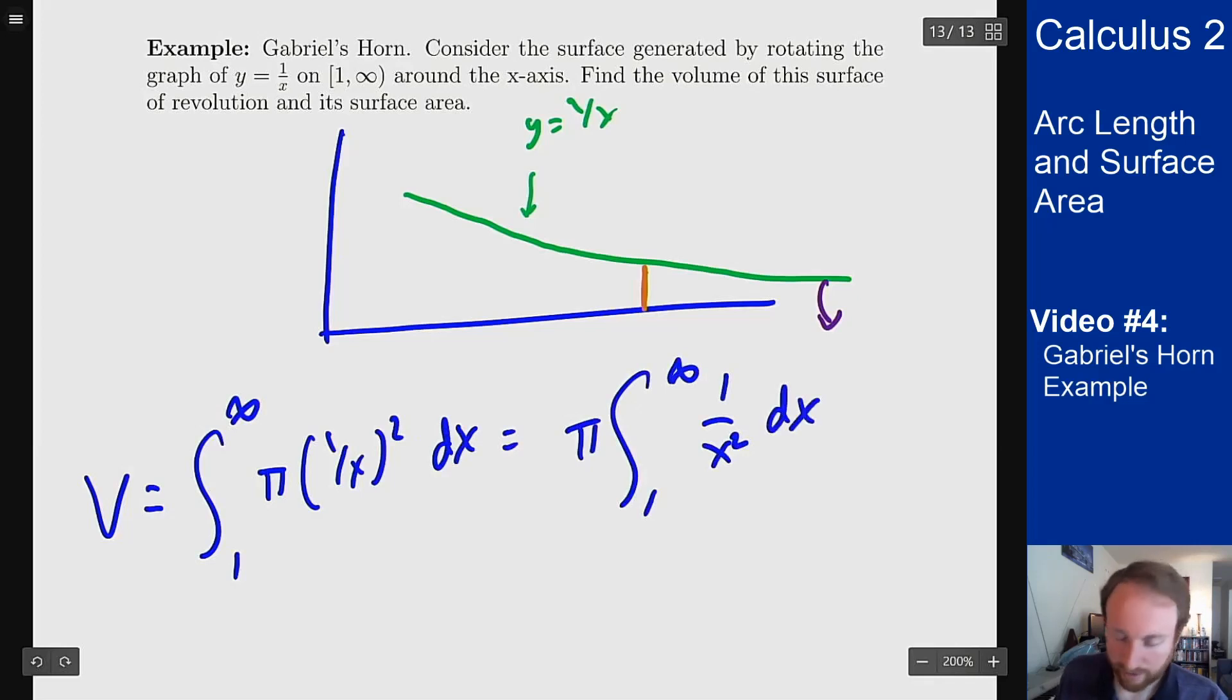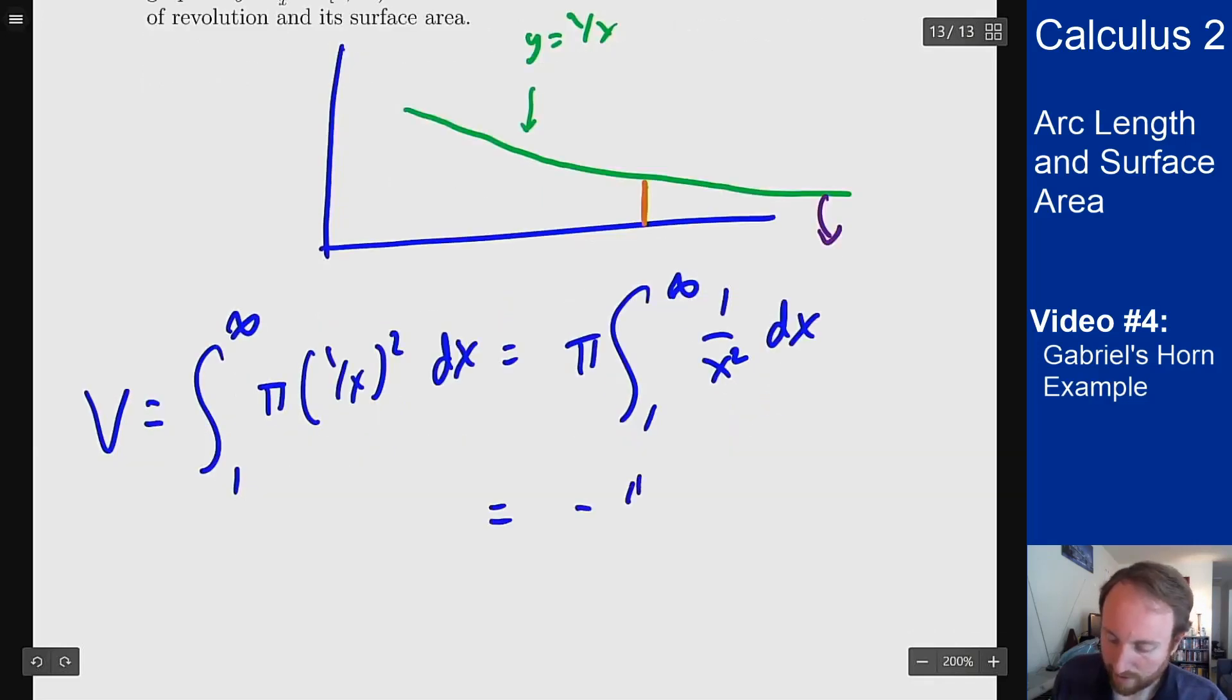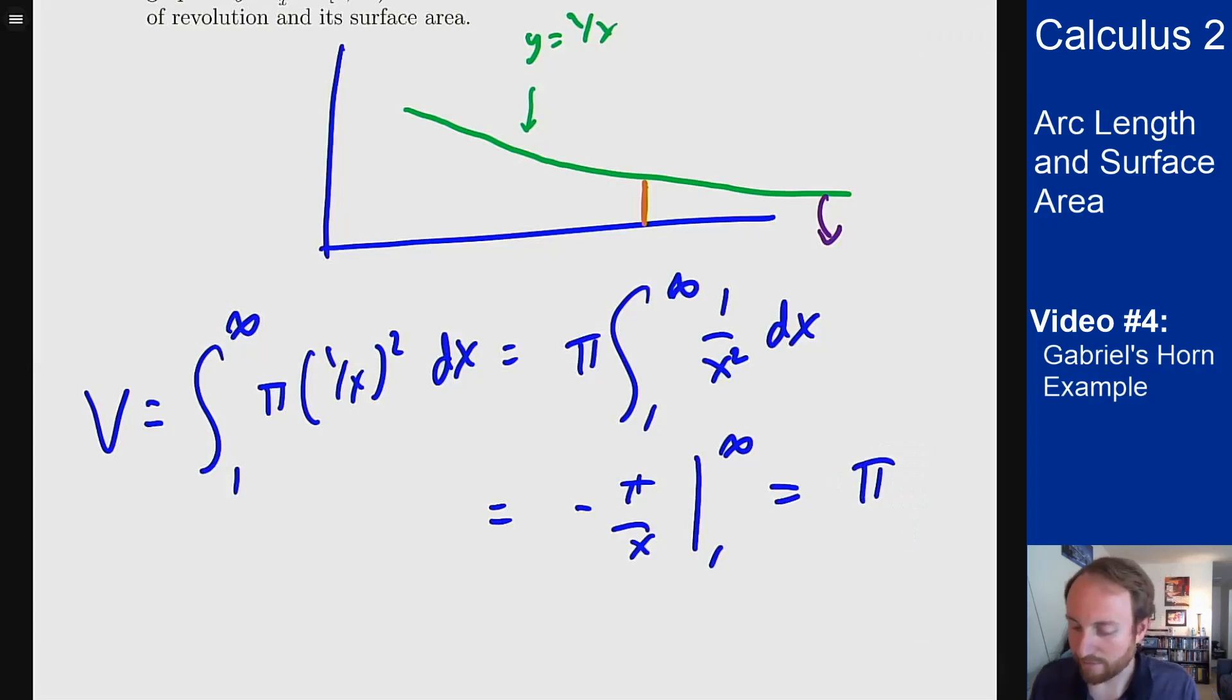And that I can integrate. Negative pi over x from one to infinity. This is convergent because I could plug in r for the upper limit, take the limit as it goes to zero, so this gives me pi because the bottom endpoint is the one that sticks around. This thing has volume pi.